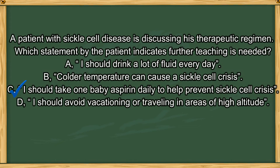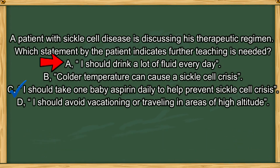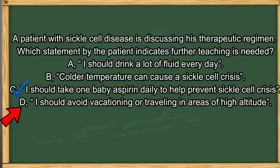The answer is C. Aspirin inhibits platelet aggregation but does not prevent sickle cell crisis. The medication hydroxyurea is prescribed for some patients to help prevent sickle cell crisis. Option A is correct — dehydration can precipitate a crisis and should be avoided. Option B is correct — cold temperatures cause blood vessels to narrow and increase the chance of red blood cells sickling and sticking to vessel walls. Option D is also correct — high altitudes increase oxygen demand and can cause a crisis.